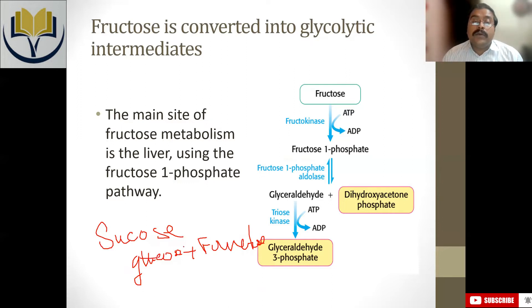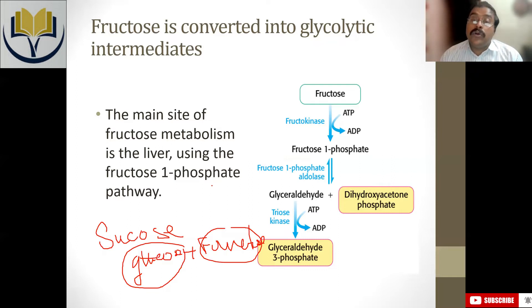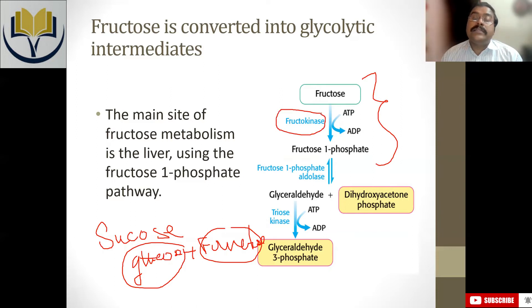After degradation of sucrose, it converts into glucose and fructose. Glucose will directly enter into glycolysis, but in case of fructose, it will go to the liver. In the liver, majority of fructose conversion into glycolytic intermediates happens. Fructose is converted into fructose-1-phosphate, and this first step is catalyzed by the enzyme fructokinase. Like glucokinase or hexokinase, fructokinase also utilizes ATP to ADP, converting fructose to fructose-1-phosphate.